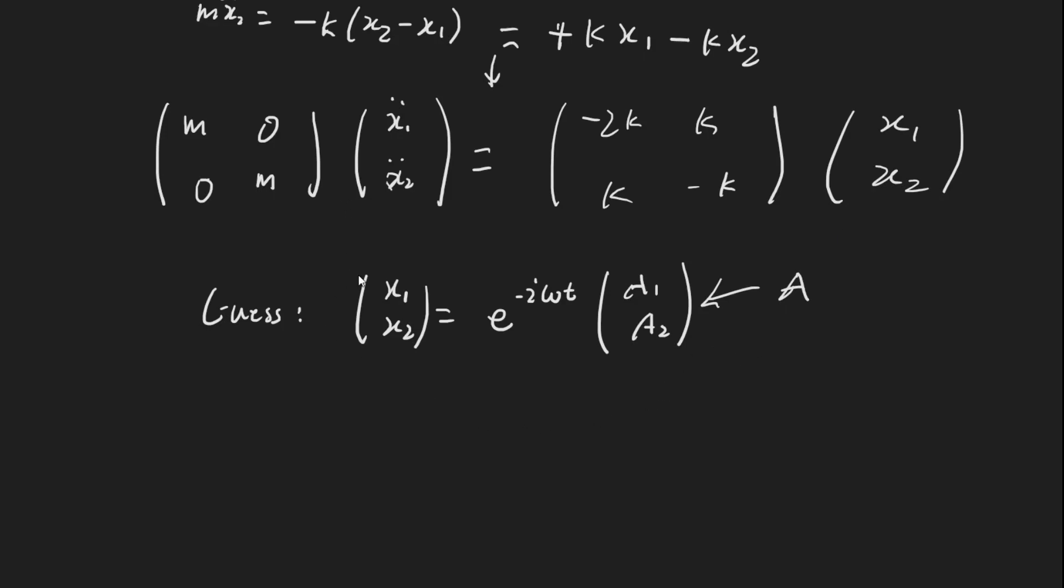And from here, let's input this information into here. First off, x1 double dot, x2 double dot is just going to be, looking at this equation here, if we take the second derivative of this one, it's just going to be this value because of how e differentiates, except with i omega multiplied, or negative i omega, but that doesn't really matter.